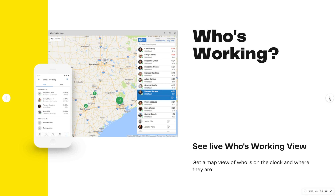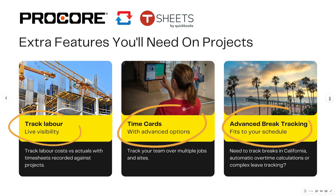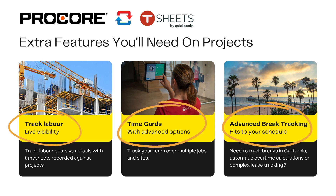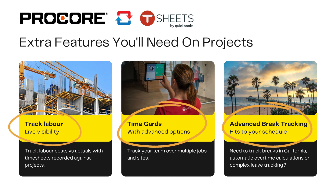Who's Working is a way of you being able to see live who is working, who's on the clock and where they are at that moment. By having those TSheet Time Sheets go back across into Procore, you can really accurately track labor costs versus actuals. You can also have time cards set up so you can track your team across multiple jobs and sites.